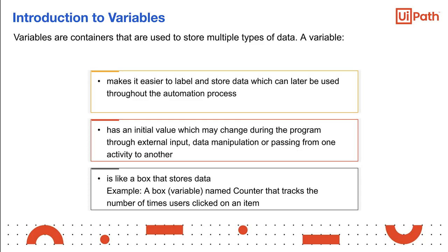Variables are containers that are used to store multiple types of data. Using variables makes it easier to label and store data which can later be used throughout the automation process. A variable has an initial value which may change during the program. The value of a variable can change through external input, data manipulation, or passing from one activity to another.